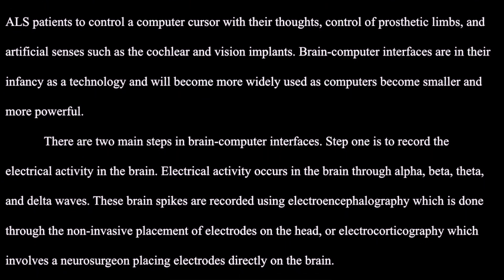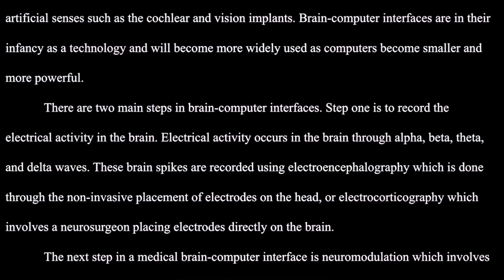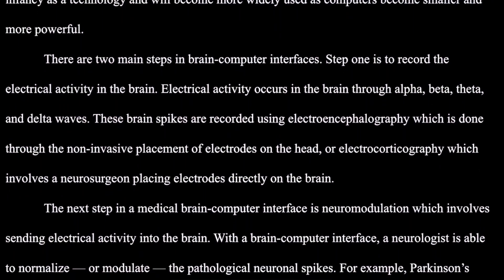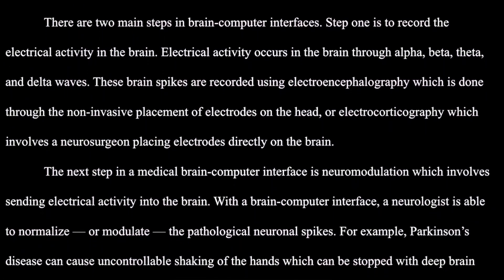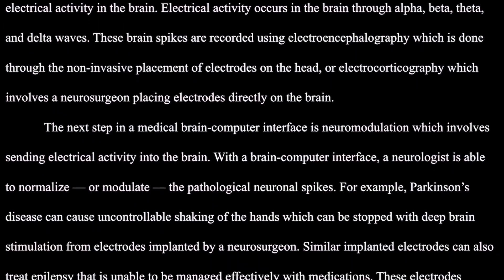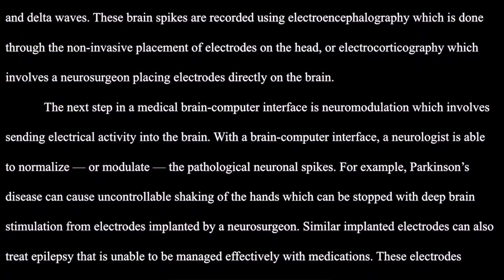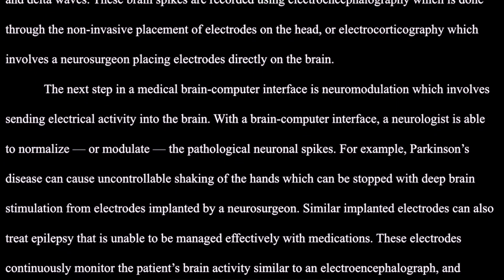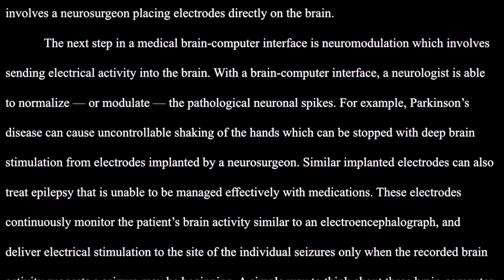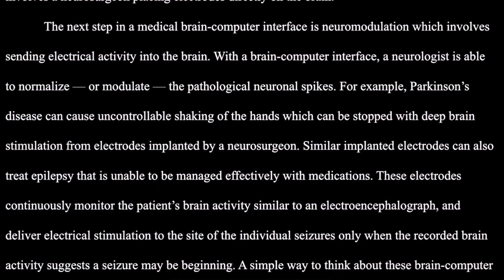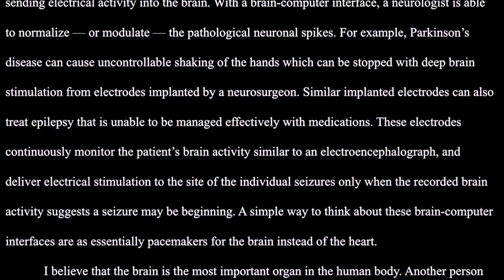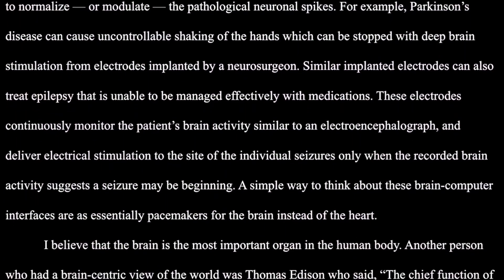'There are two main steps in brain-computer interfaces. Step one is to record the electrical activity in the brain. Electrical activity occurs in the brain through alpha, beta, theta, and delta waves. These brain spikes are recorded using EEG, done through the non-invasive placement of electrodes on the head, or electrocorticography, which involves a neurosurgeon placing electrodes directly on the brain. The next step is neuromodulation, which involves sending electrical activity into the brain. For example, Parkinson's disease can cause uncontrollable shaking of the hands, which can be stopped with deep brain stimulation from electrodes implanted by a neurosurgeon.'